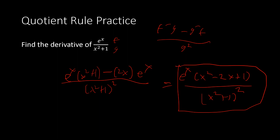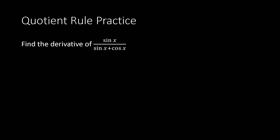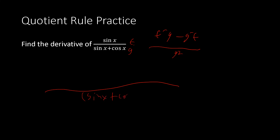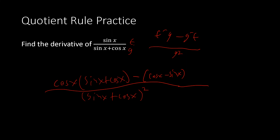We could simplify further but we'll leave it there. One last example: we find the derivative of sin(x) / (sin(x) + cos(x)). Writing the formula: f'g − g'f over g². Here f is sin(x) and g is sin(x) + cos(x), so the denominator is (sin(x) + cos(x))². f' is cos(x), g is sin(x) + cos(x). Then minus g': the derivative of sin(x) + cos(x) is cos(x) − sin(x).